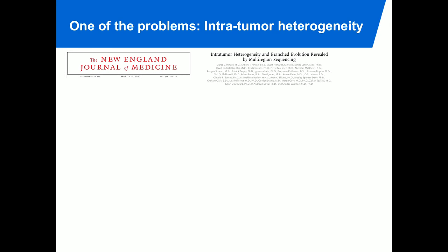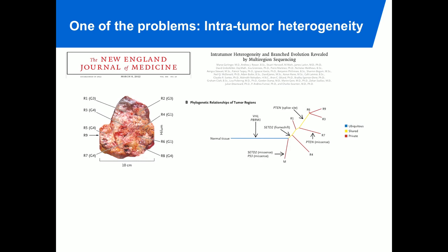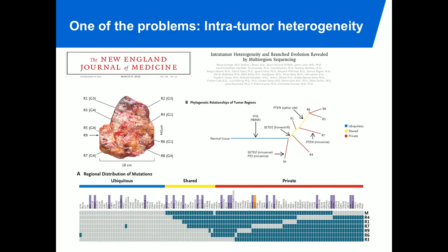One key paper in this field was published by Charlie Swanson's group from UCL in London. They looked at renal cell carcinoma, took the tumor out, and sequenced different areas within the tumor to assess biological heterogeneity at the gene expression and molecular level. What they found was staggering: there are many common mutations occurring in almost every region — like EGFR or KRAS in lung cancer — but also very specific mutations occurring in only one or two regions.